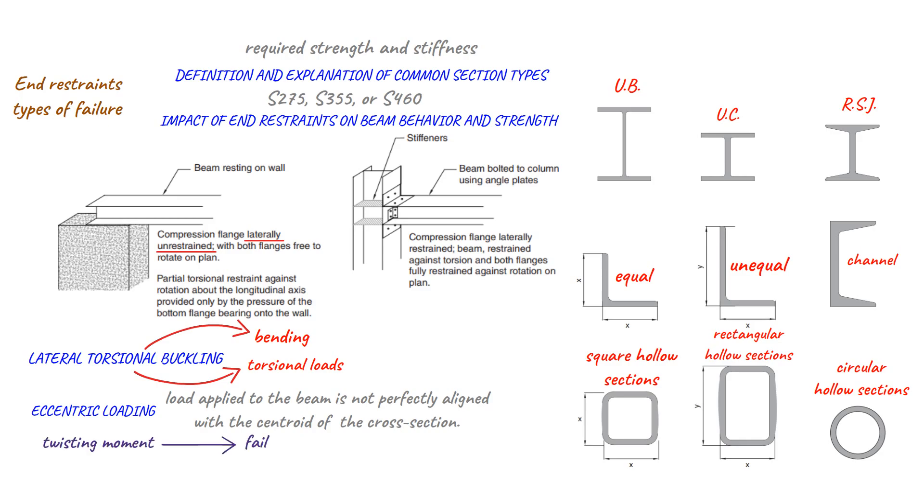To prevent this, it is necessary to increase the effective length of the beam in the design process to account for the additional twist caused by the eccentric loading.